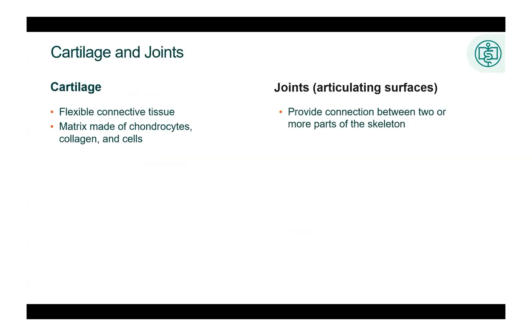Cartilage is a type of flexible connective tissue that is non-vascular, has no blood vessels. Cartilage is a matrix made of chondrocytes, collagen, and cells called proteoglycans, depending on the type of cartilage. Joints and articulating surfaces are synonymous and provide a connection between two or more parts of the skeleton. Joints are classified according to the type of connective tissue and the articulating surfaces. The three types of joints are fibrous, cartilaginous, and synovial. Most joints are synovial.